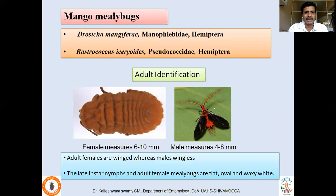Another very important and widely distributed pest is Drosicha mangiferae, which has an annual life cycle. Rastrococcus iceryoides is becoming very serious and is a common species as well. Coming to Drosicha mangiferae — it is a comparatively thick, flat mealybug, though its body is usually covered with mealy matter. The female is wingless, whereas males are winged — that is how we can differentiate the two sexes.